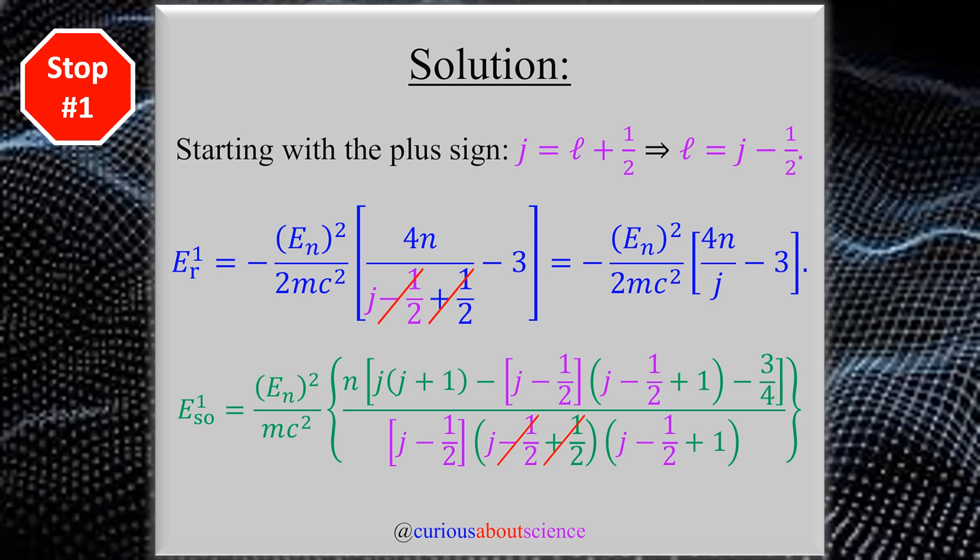Okay, so in stop one, if we are to heed the advice of the question, it would make sense for us to start with the plus sign. Now, if we notice here, we have to be careful because they give us the formula for J as a function of L. But in all our formulas, we're given that L is the value that we need to input. So by solving for L, keeping it in terms of J, we're good to go. So let's start off here by recognizing that both E1R and ESO1 are both first-order corrections.